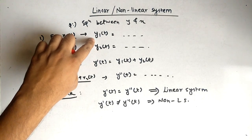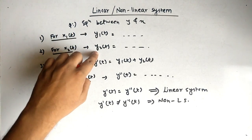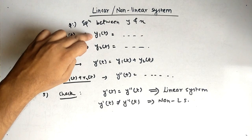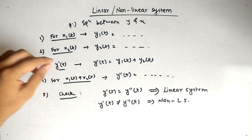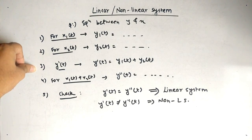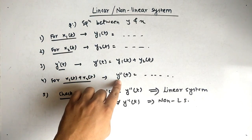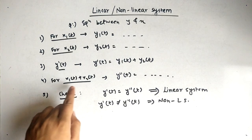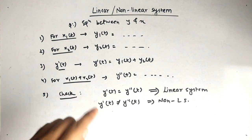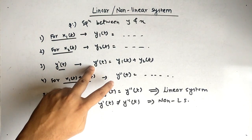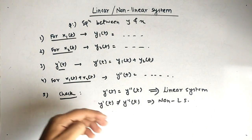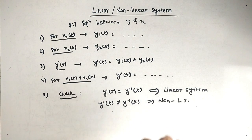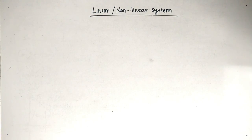Quick recap: for x1 of t, find y1 of t; for x2 of t, find y2 of t. Add both to get y-dash of t. Then find y-double-dash of t, where the input is x1 of t plus x2 of t. Check both: if equal, linear system; if not equal, nonlinear system. Let's see an example.